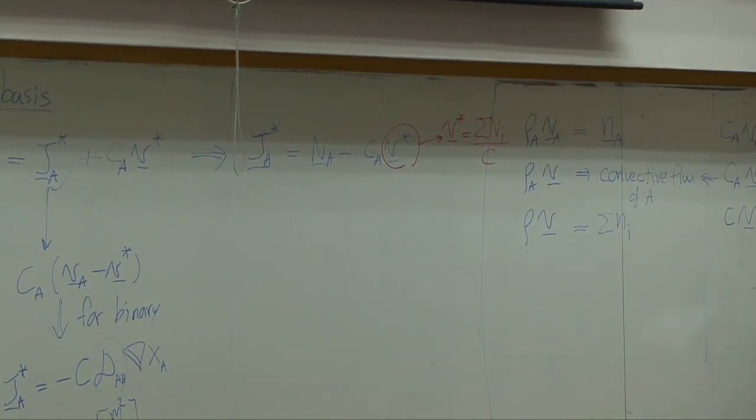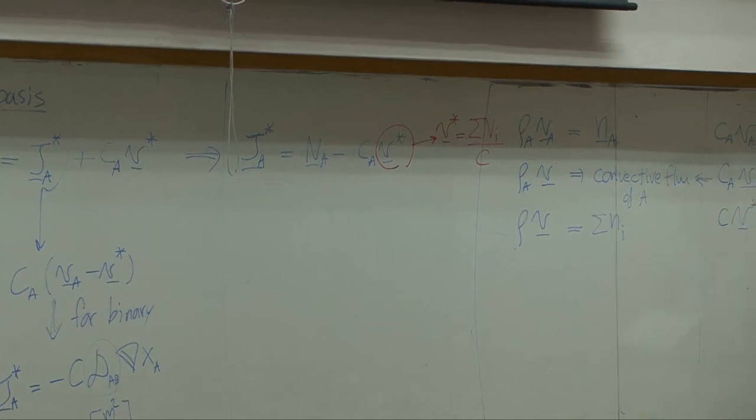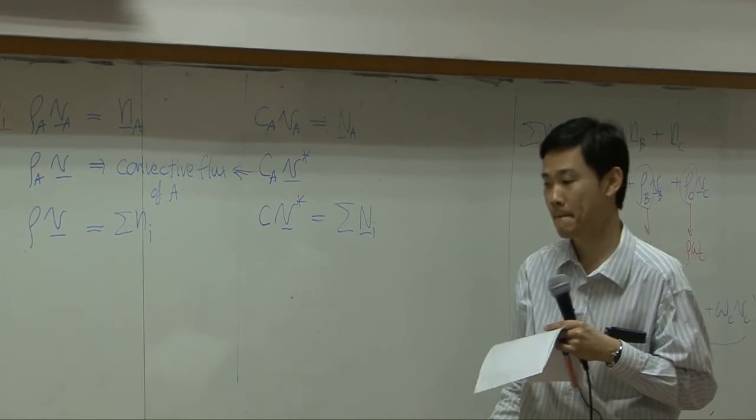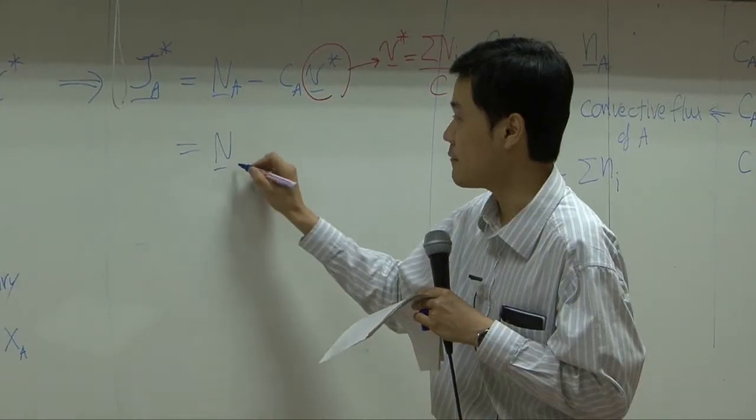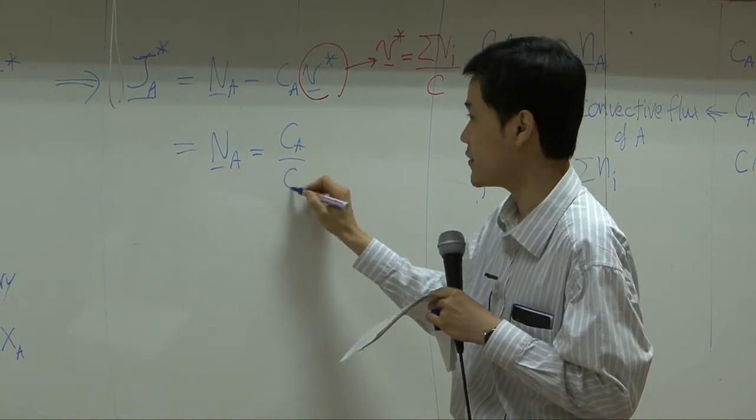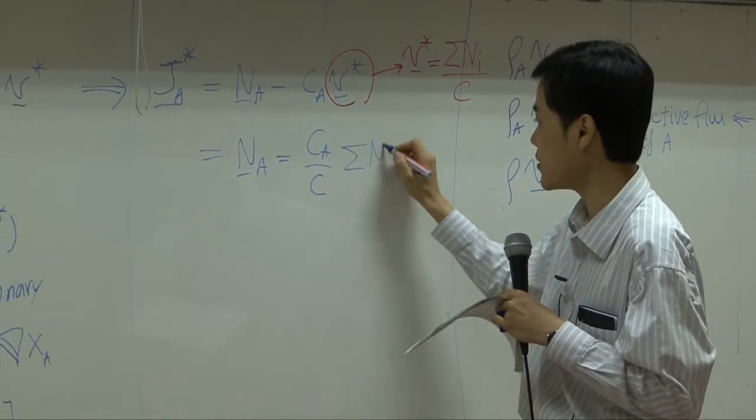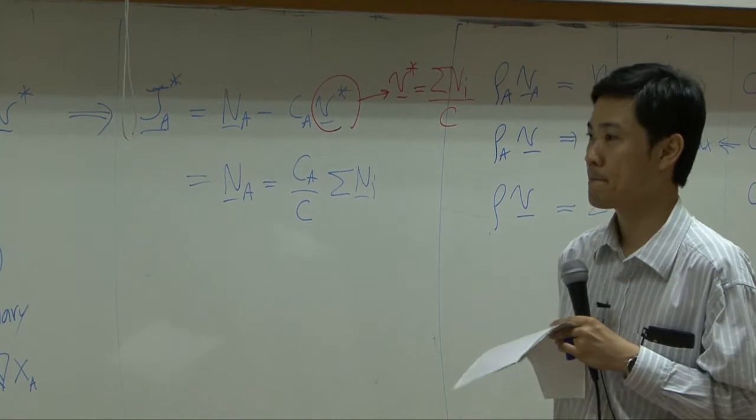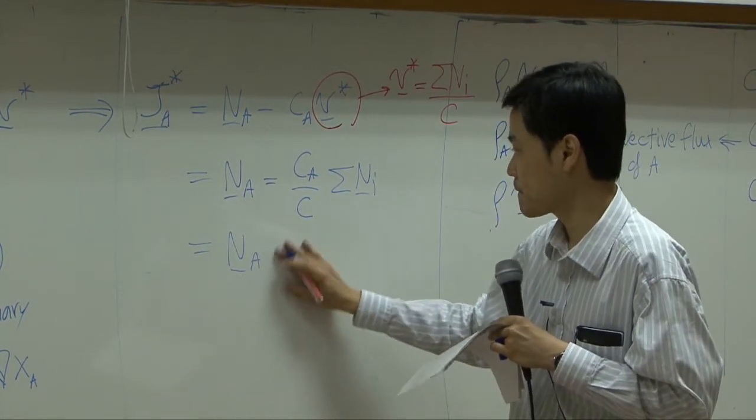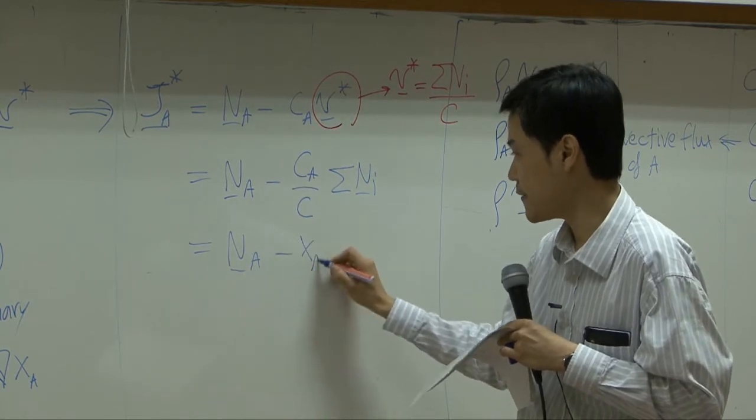If you take C down here, you get that relationship. You end up with N_A, C_A over C, summation capital N_I, which is X_A.